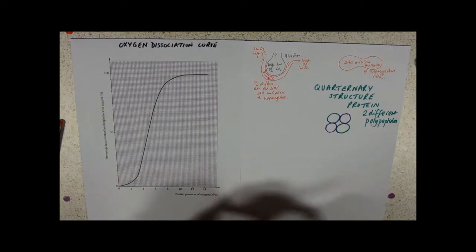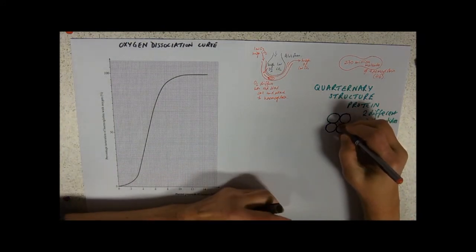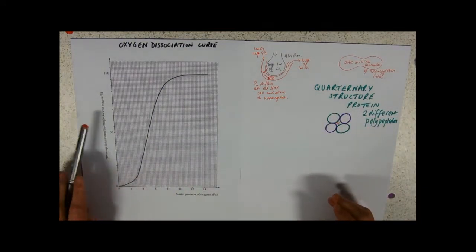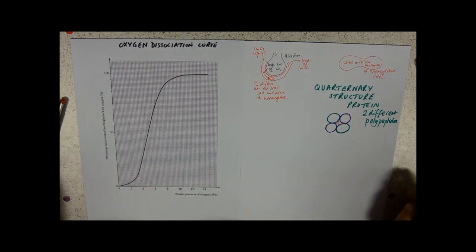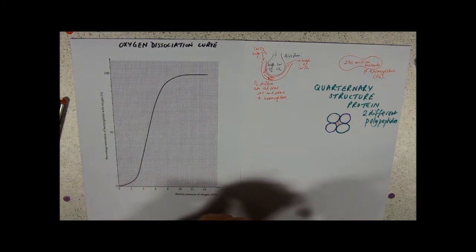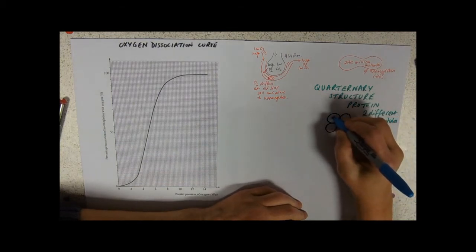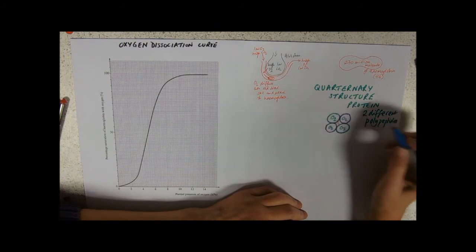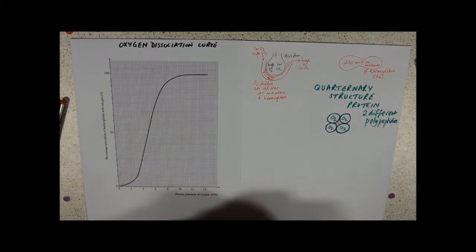In the middle you've got an iron, so it's got a prosthetic group as well. If you do chemistry you'll probably learn how oxygen bonds to that iron, but I don't do chemistry so I don't care much. The key thing is that each one molecule of hemoglobin can carry four oxygen molecules.